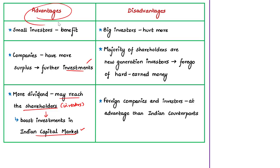Looking at the disadvantages: big investors and big promoters have to pay a higher rate of tax under the classical system, so they will be at a loss, having to give up a major portion of their earnings as tax. Also, the majority of shareholders in India are investing their hard-earned money, while only a few invest inherited wealth. For this large proportion of shareholders, any tax paid on dividend is hard-earned money foregone, which to some extent discourages new generation investors.